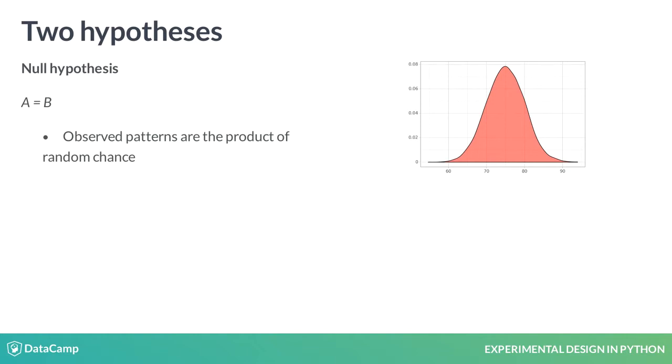To draw a conclusion, we will need to distinguish between two cases or hypotheses. In statistics, our starting point is the null hypothesis: that there isn't anything interesting happening, and the observed patterns are just the product of random chance.